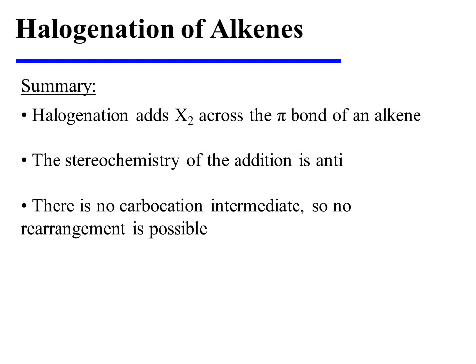In summary, halogenation adds chlorine or bromine across the pi bond of an alkene. The stereochemistry of the addition is anti. And there is no carbocation intermediate, so no rearrangement is possible.